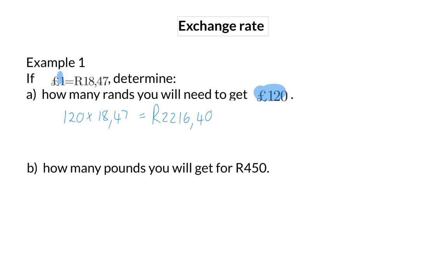Question B: Determine how many pounds you will get for 450 rand. This time, we need to figure out how many groups of 18 rand 47 we can get out of 450 rand, and that will give us our number of pounds. We will take 450 rand and divide it by 18 rand 47. This means that 450 rand will give you 24 pounds and 36 cents.